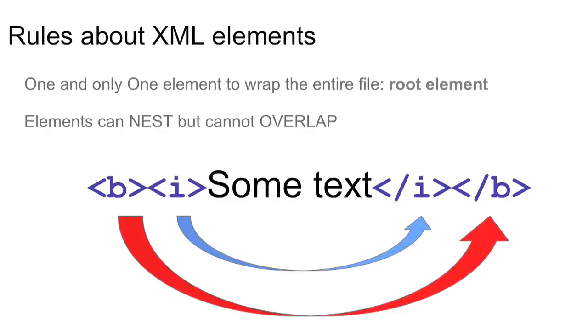How to use elements? Elements can be one after the other — so they can be in a sequence — or they can nest, meaning that you can use an element within another element. But one basic rule that can never be broken is they cannot overlap, meaning that if you open element A and then open element B, you have to close B before you can close A. This is always true. You can never bend this rule. You also need an element that wraps the entire file, which we call the root element — the beginning and the end of everything is within the same element.